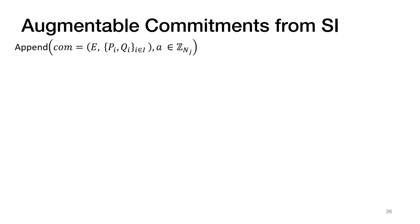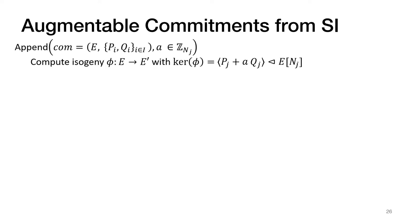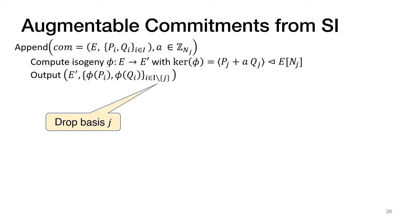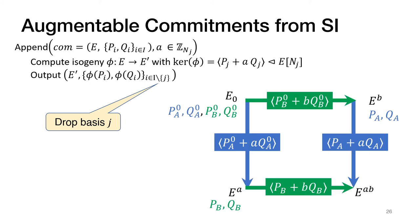To append a value a from the j-th input space to a commitment, we map a to a subgroup of the N_j-th torsion, compute the isogeny with that kernel, and output a new commitment whose curve is the image curve. We publish new bases as the images of the original bases under this isogeny, and importantly we drop the j-th basis. So every time we append a value, the set of bases shrinks by one. Because the subgroups are chosen from coprime torsion groups, the diagram is commutative and different orderings of appending result in the same curve up to isomorphism.